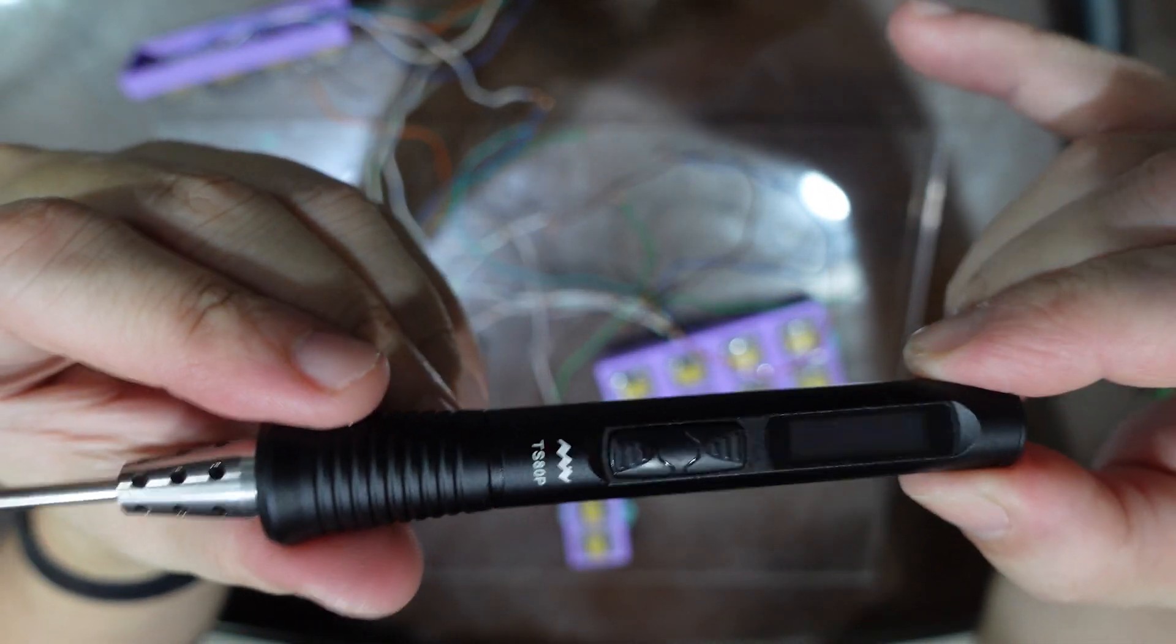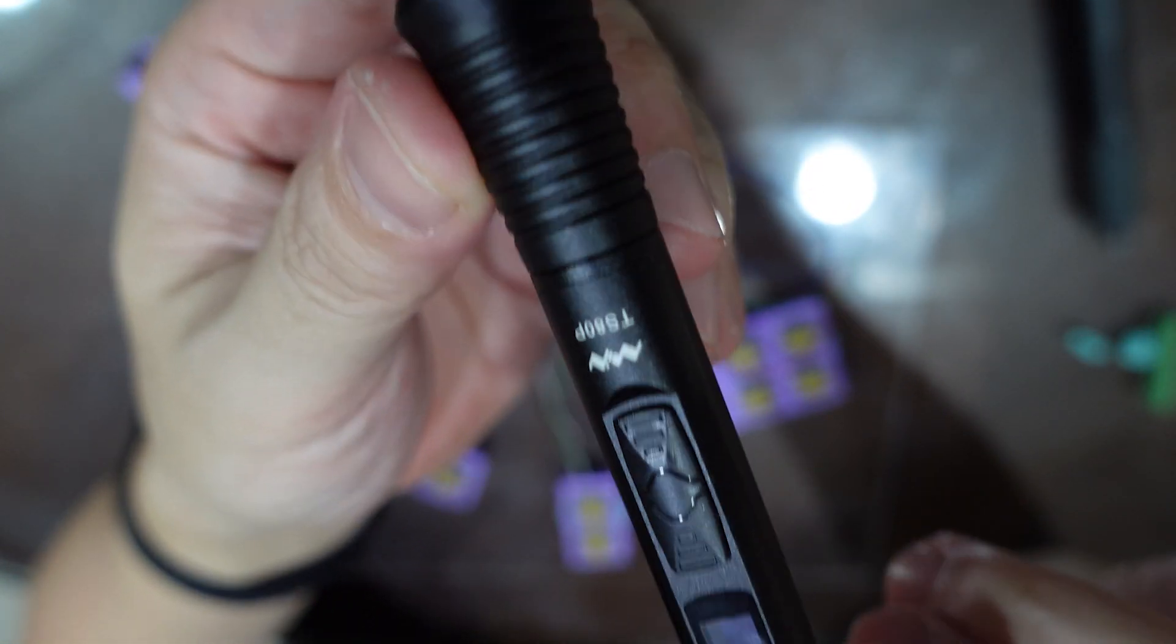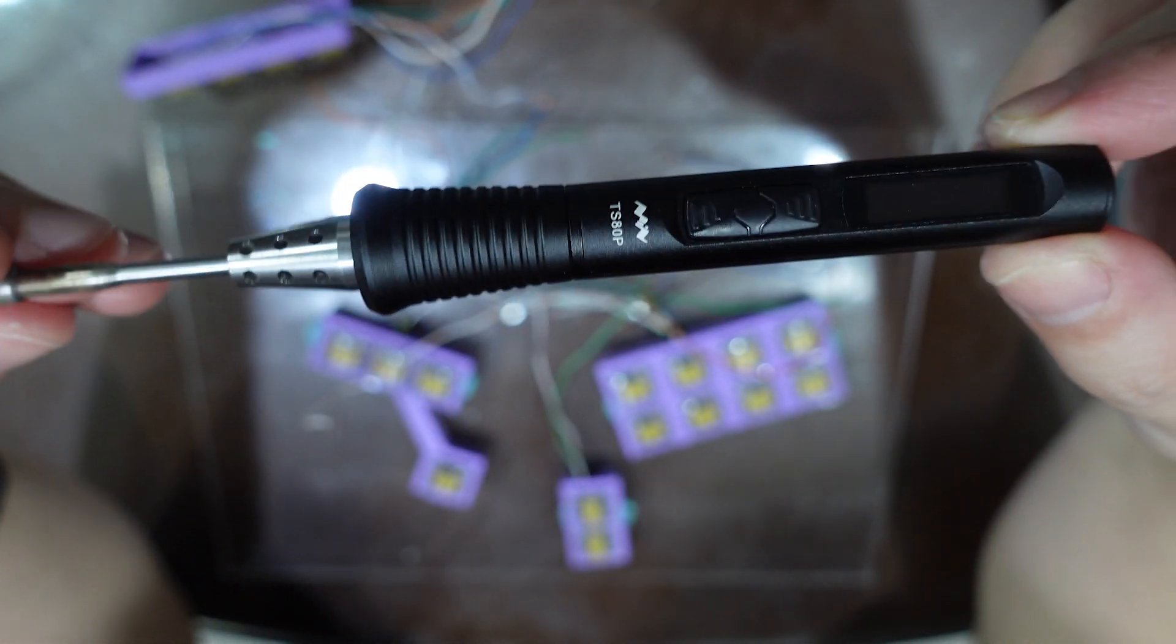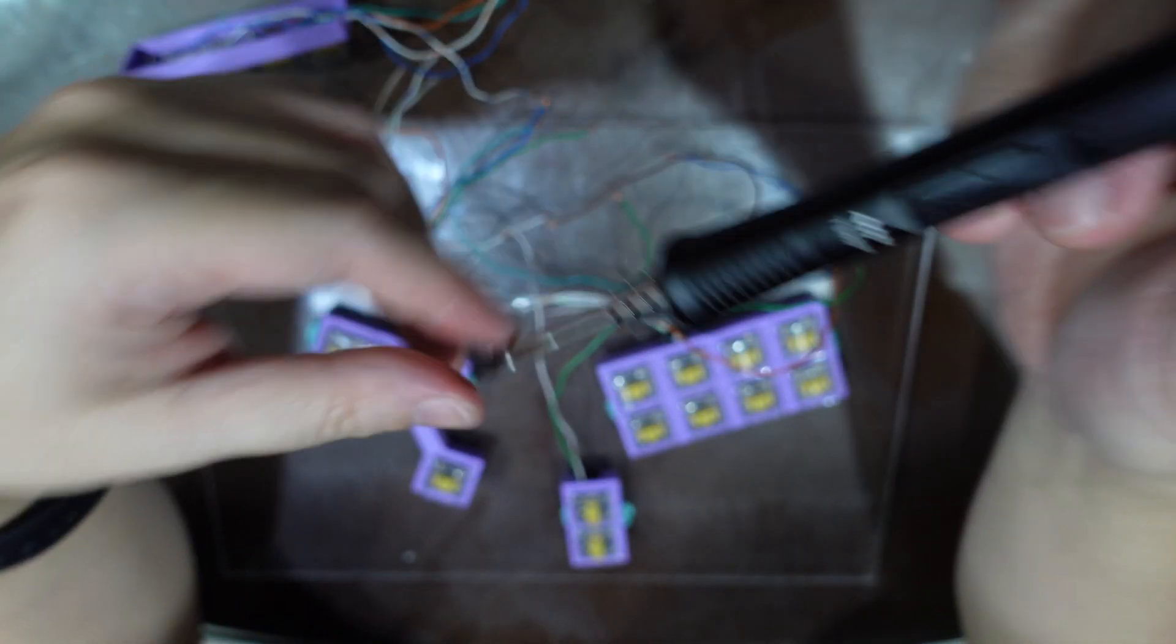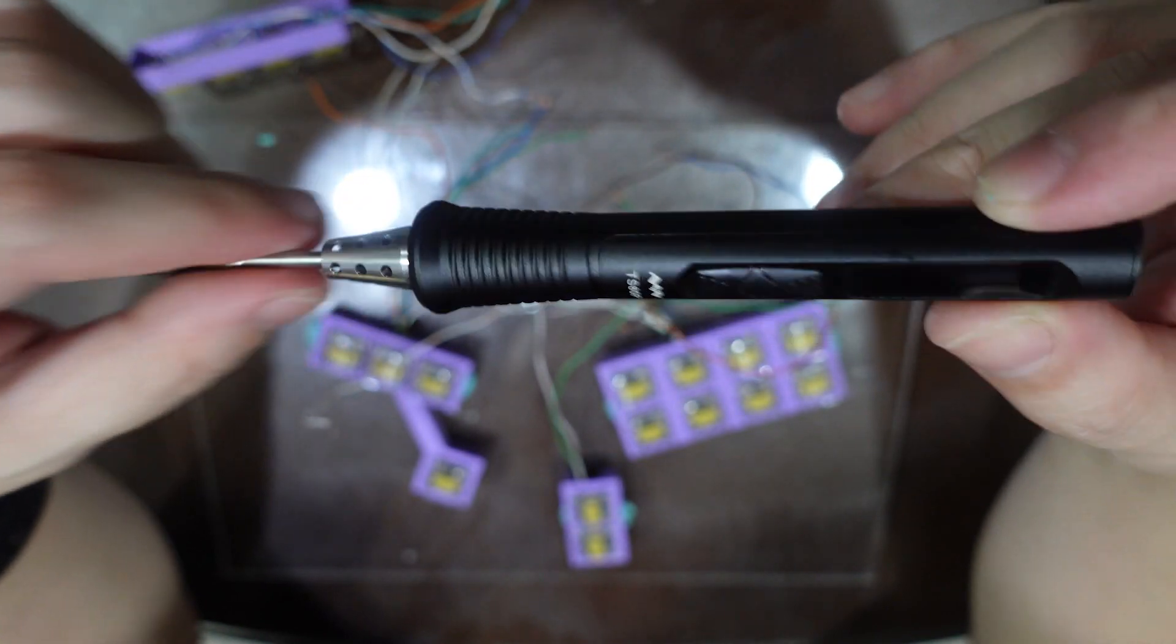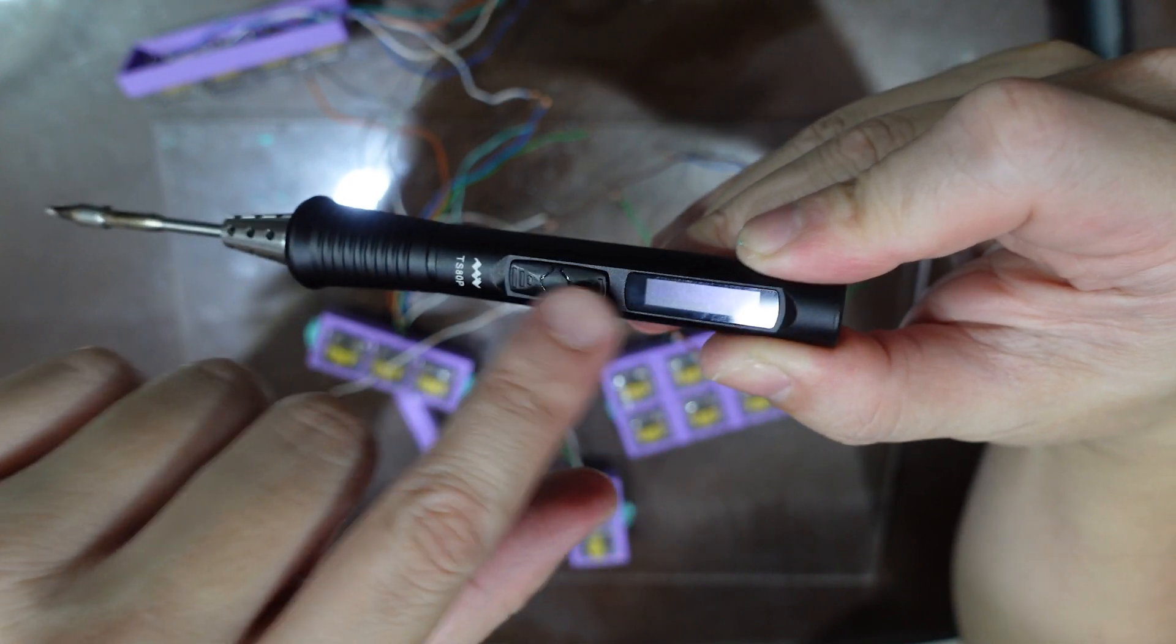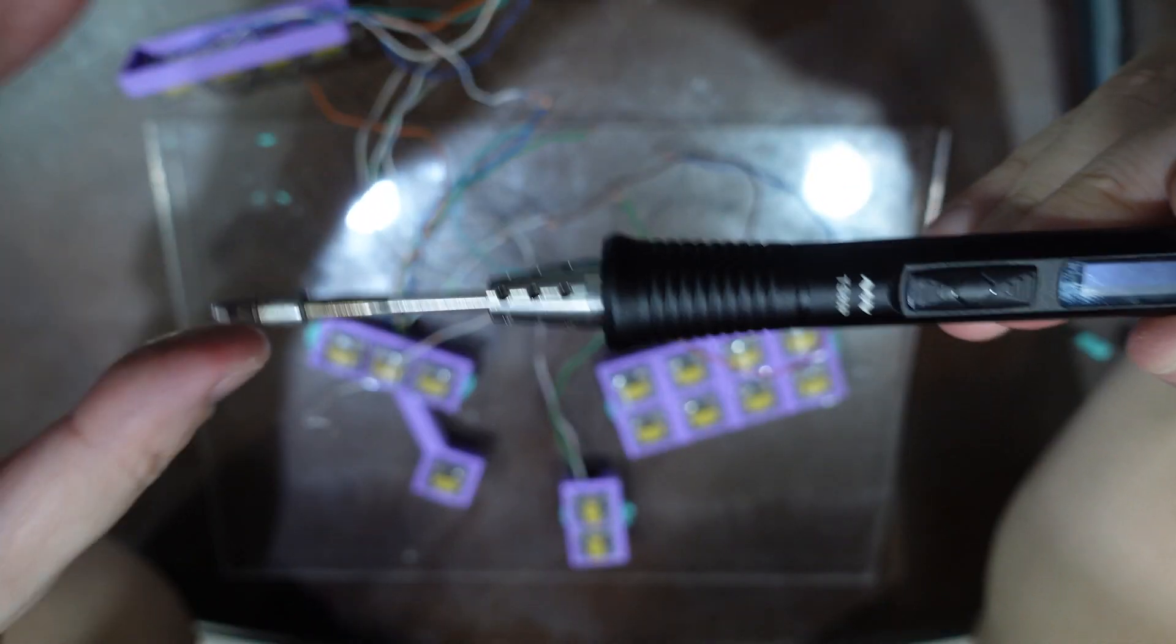I got this which is the Minware TS80P. So this is a very interesting soldering iron because it runs off USB-C PD. If you plug it in, you can just use a USB-C PD power bank and plug it in and you're ready to go. The good thing is it heats up really fast and you can even see the temperature and everything here on the status.